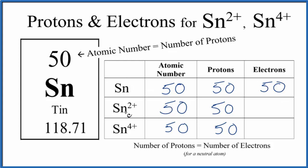To find the number of electrons for Sn2+, this 2+ right here means we've lost two negative charges. We've lost two electrons. Since we've lost two electrons, 50 minus 2, that's 48. And then for Sn4+, we would have 46 electrons.